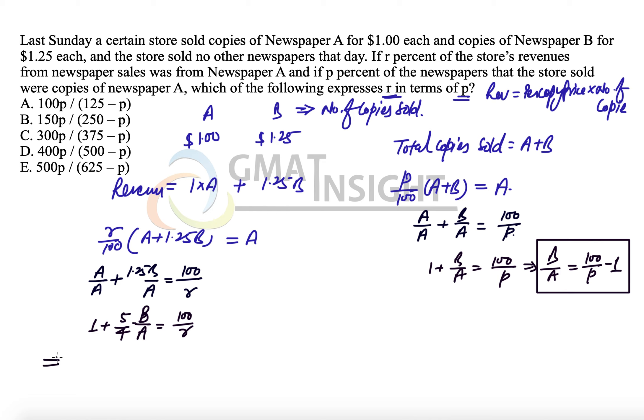This equation now becomes 1 plus 5 over 4 times (100 over P minus 1) equals 100 over R. All we have to do now is simplify this equation. This becomes 1 plus 500 over 4P minus 5 over 4 equals 100 over R.